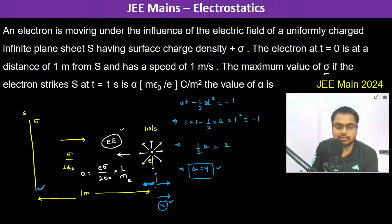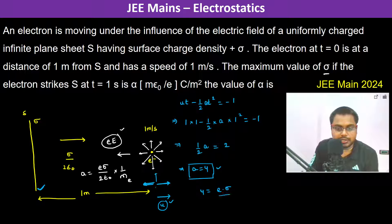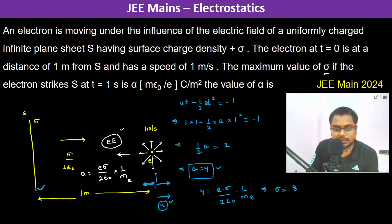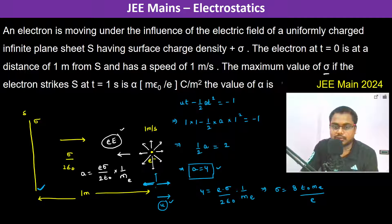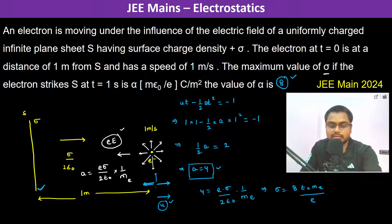This acceleration of 4 m/s² should equal e·σ/(2ε₀·mₑ). Therefore, σ = 8·ε₀·mₑ/e. So the value of α is 8.